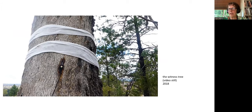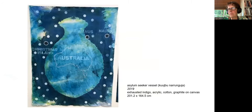This — the witness tree — is near a place called Mile Creek where people were massacred. There are microphones that actually listen into the tree, and you hear what happens as the water is pulled up from the roots from the groundwater up to the leaves. This next work shows asylum seeker vessels and some of the asylum seeker detention centres around Australia where people were sent. It's been sewn up like the idea of sewing up mouths — or our shame.